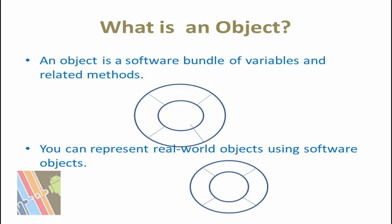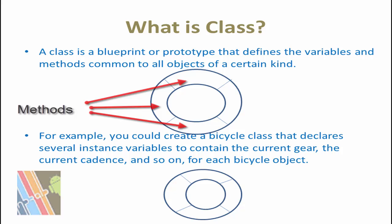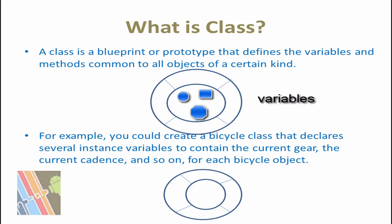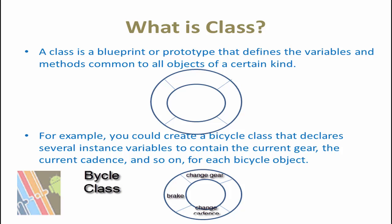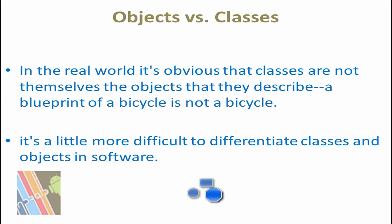Now, what is a class? A class is a blueprint or prototype that defines the variables and methods common to all objects of a certain kind. For example, you can create a Bicycle class that declares several instance variables to contain the current gear, the current cadence, and so on for each bicycle object. The class would also declare and provide implementations for the instance methods that allow the rider to change gear, brake, and change the pedaling cadence.